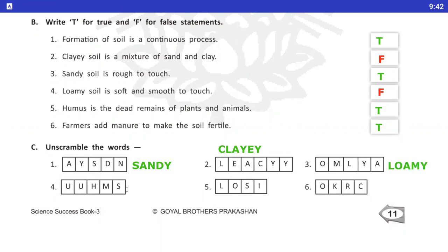Number 4, U H M S. H U M U S. Humus. Number 5, L O S I. Soil. Answer, soil. S O I L.